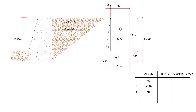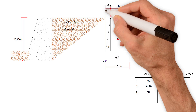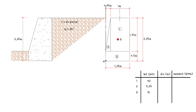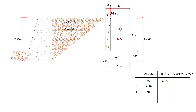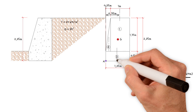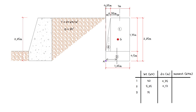The next column is the distance from the centroid of each section to point A. For section 1, the distance equals 0.5 meters plus 0.25 meters, which is 0.75 meters. For section 2, the distance equals two-thirds of 0.25 meters, which is 0.17 meters. For section 3, the distance equals half of 1.25 meters, which is 0.625 meters.